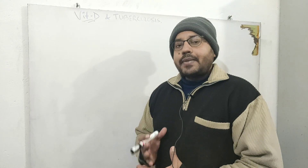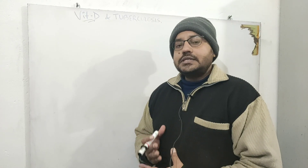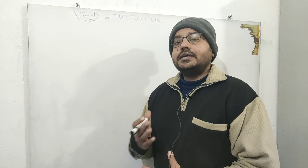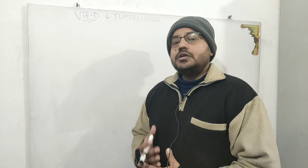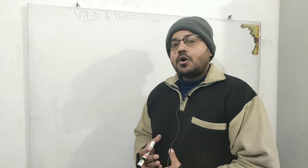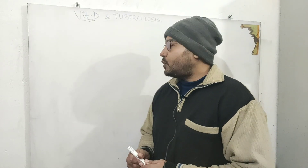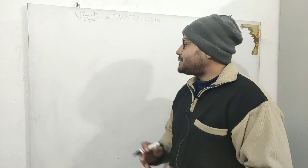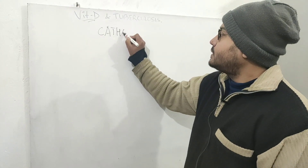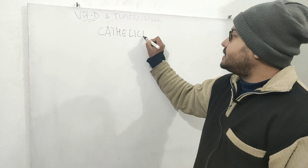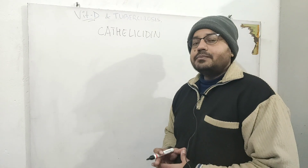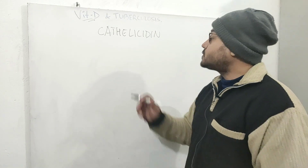Macrophages are important immune cells that help you fight against infection. Vitamin D helps in the synthesis of an important antimicrobial peptide called cathelicidin. This is a very important antimicrobial peptide that belongs to the defensin family.